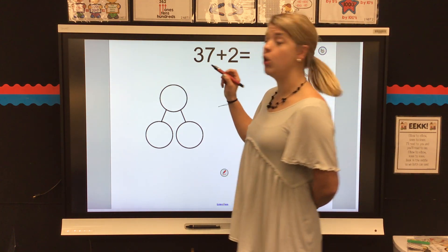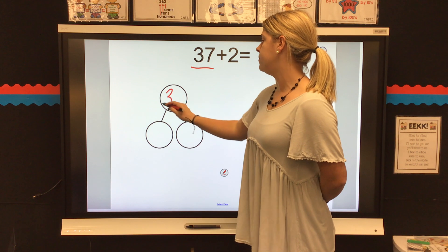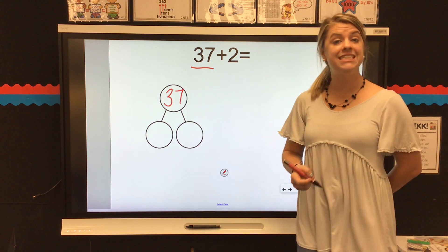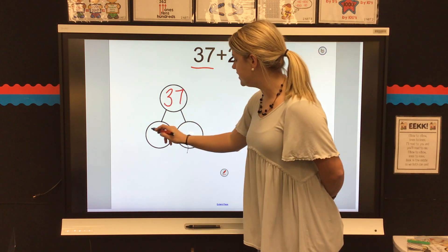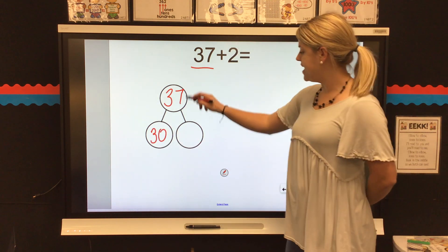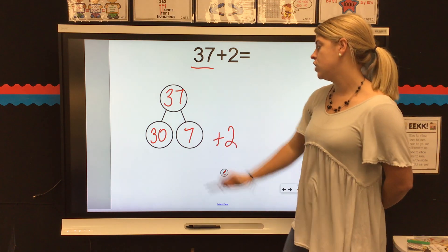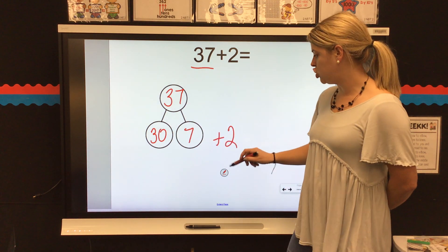37 plus 2. Remember, we put this big number in our number bond, and then we decompose. 37 is the same thing as three tens, which I know equals 30, plus 7. And then I'm also going to add my 2. 30 plus 7 plus 2.